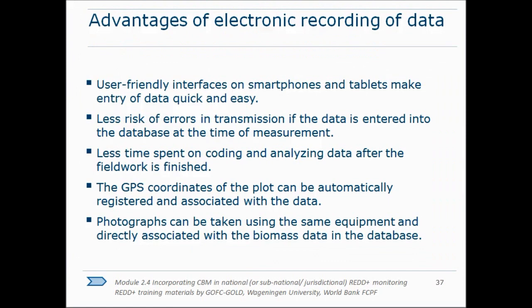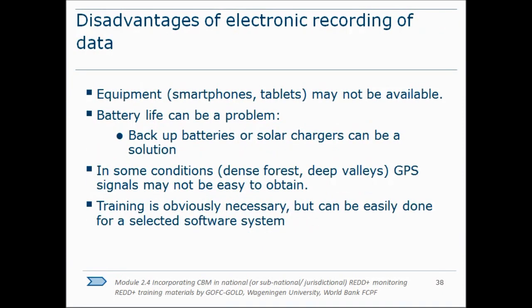The advantages of using an electronic interface include saving time, greater accuracy through fewer mistakes, being able to indicate the GPS location of every tree measured, and tying photographs to plot measurements. The disadvantages are battery problems — though solar chargers can help — and difficulty picking up GPS signal in very dense forest. Some training will also be required.